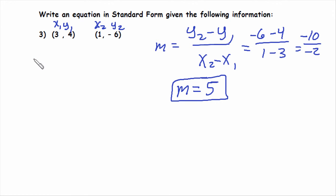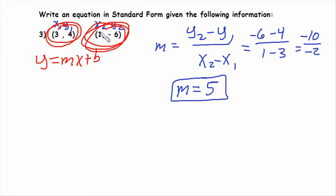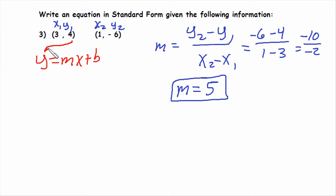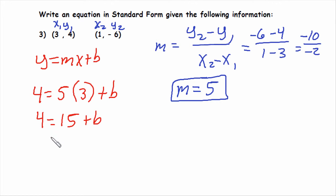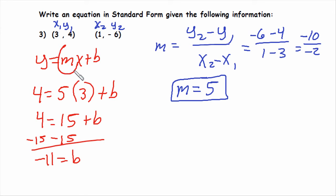Now we choose a point to fill into y equals mx plus b. I prefer points with positive coordinates, so I'll use the first point. y is 4, m is 5, x is 3, plus b. Solving for b: 4 equals 15 plus b, subtract 15, so b equals negative 11. Now I have slope 5 and y-intercept negative 11, so in slope-intercept form the equation is y equals 5x minus 11.